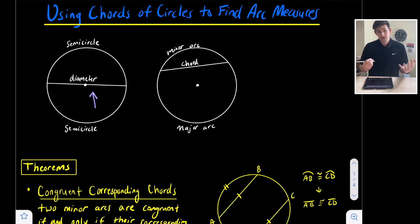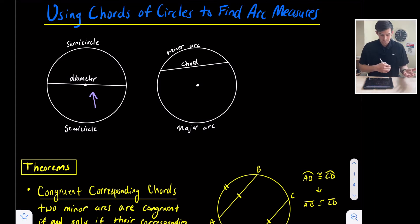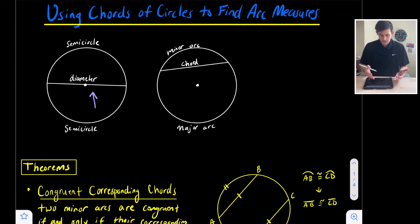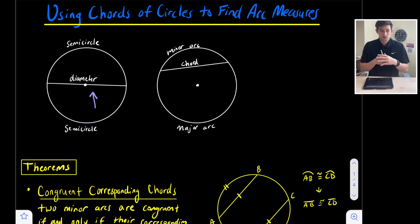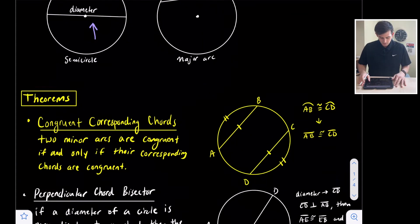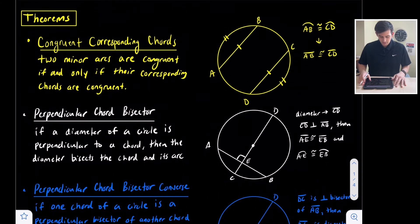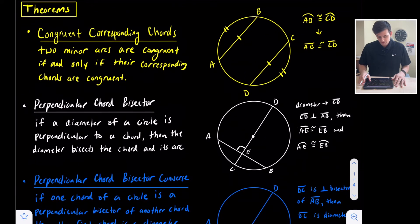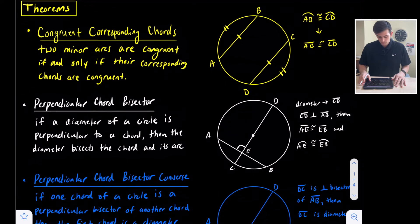So those semi-circles would each be 180 degrees. We could also have a chord that is not a diameter, like the example on the right, where we are splitting our circle into a minor and a major arc. Let's look at three theorems that are associated with chords.